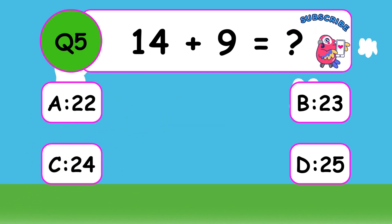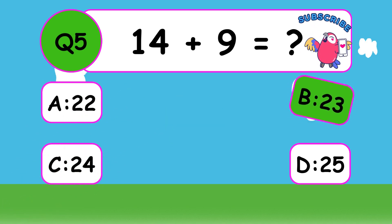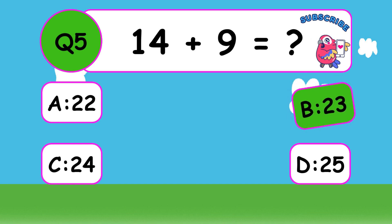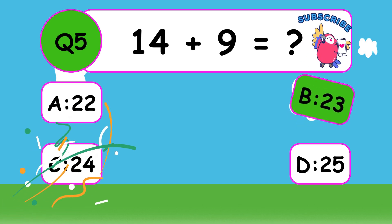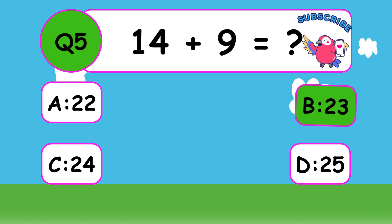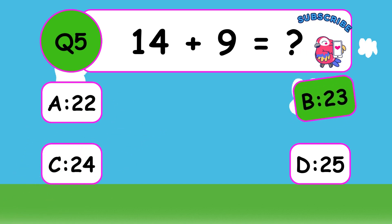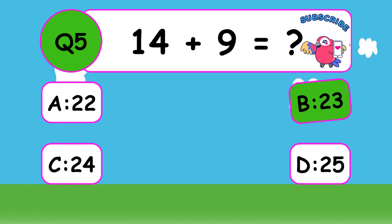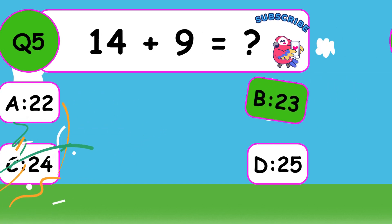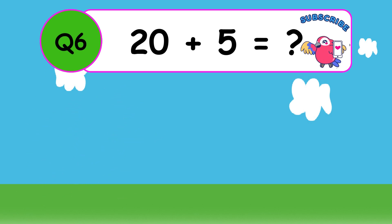What is 14 plus 9? The correct answer is B, 23. Excellent, 14 plus 9 equals 23.